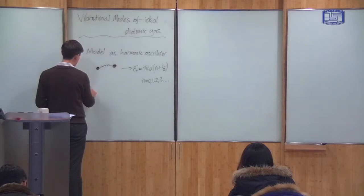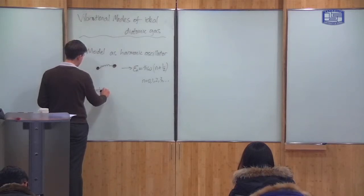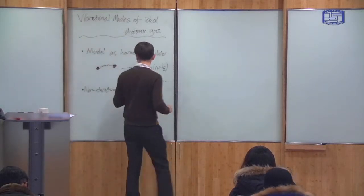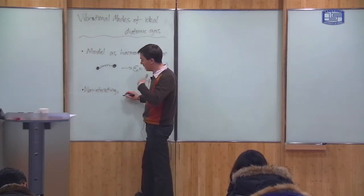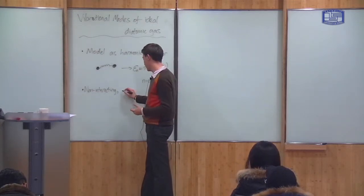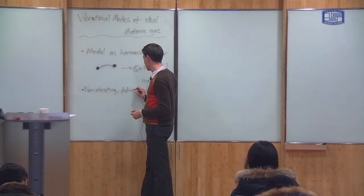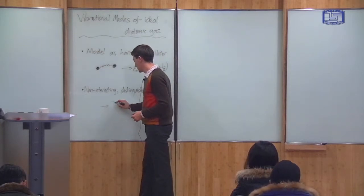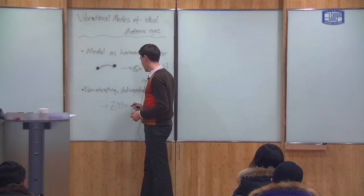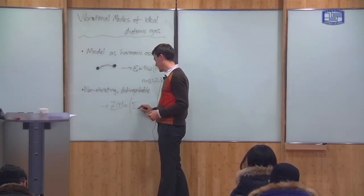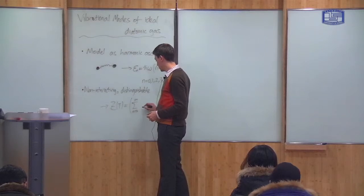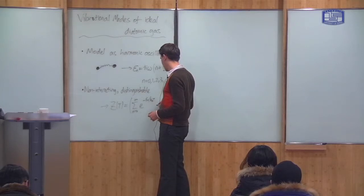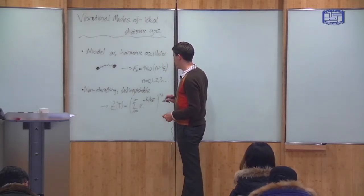Now these particles, I assume, are non-interacting. They're distinguishable because they are at high enough temperatures in different translational modes. So therefore, we get that Z is, we use the formula we always use, it's the sum over energy levels, in this case it's n, e to the minus epsilon_n over k_B T, all to the power of the number of particles.